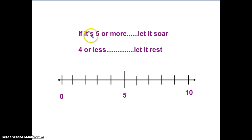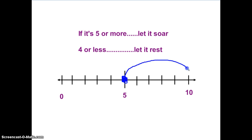What does that mean? So that means if the number that we're using to help us round — which is the number right next door to whatever place we're rounding, the tens, the hundreds, or the thousands — if it's five or more, we're going to let the answer soar. It's going to soar to the next ten, higher up.